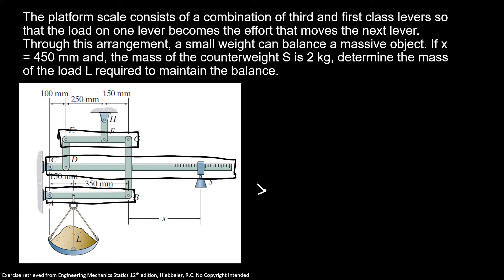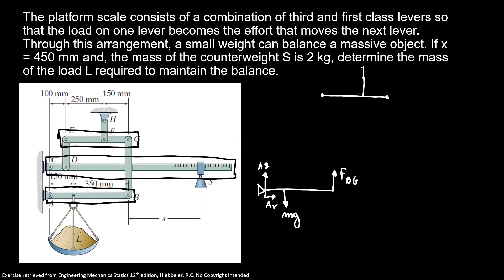Here we have A, we have our AB. The reactions AY and AX, the weight that we're going to call A₀mg, and one member force, force BG. The second one is E, G, and here our H — so HY and HX — and here our reaction for force BG.